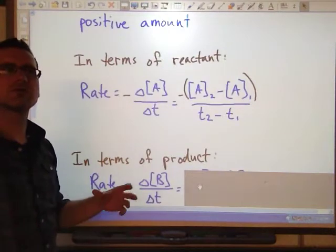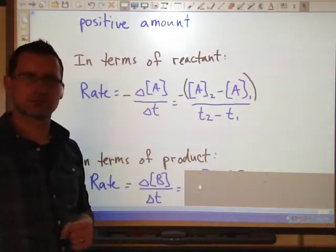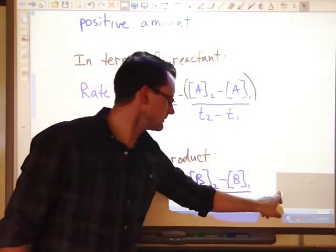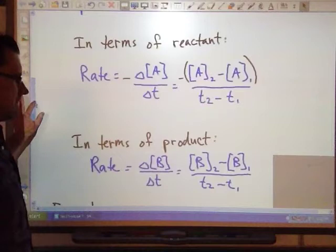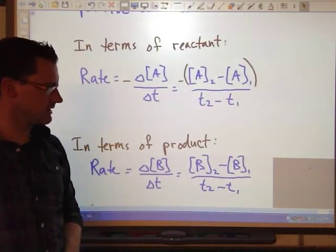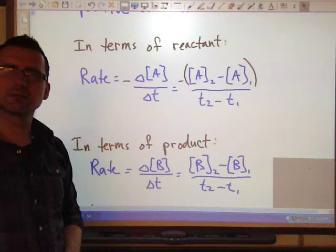Because I know the product B is being produced. It's adding an amount. I'm not going to get a negative value. I won't have to worry about that. So it's simply concentration of B2 minus concentration of B1 over T2 minus T1.